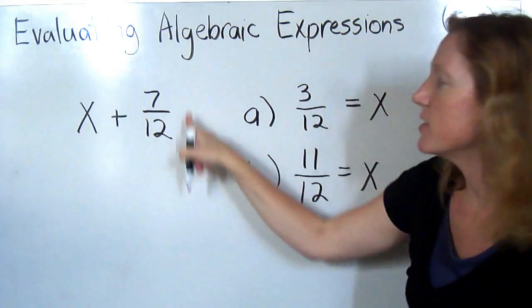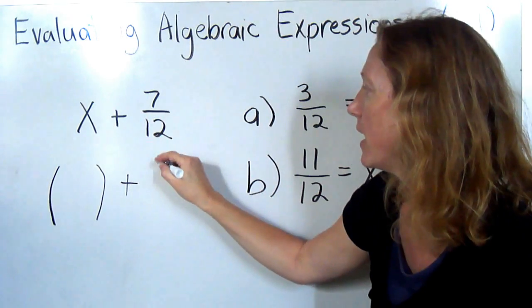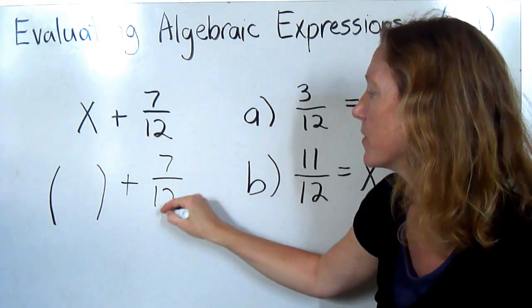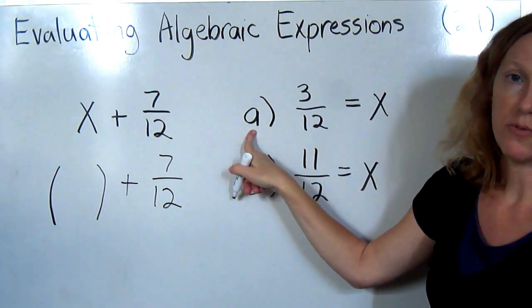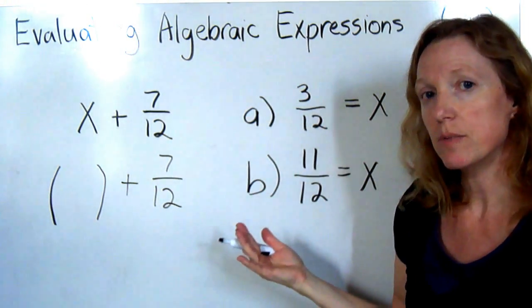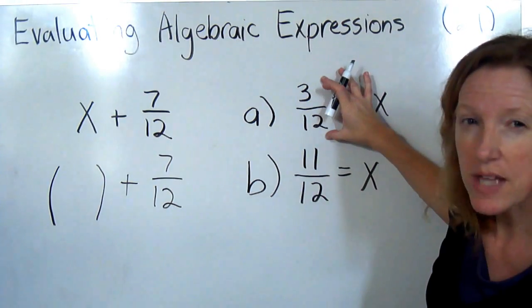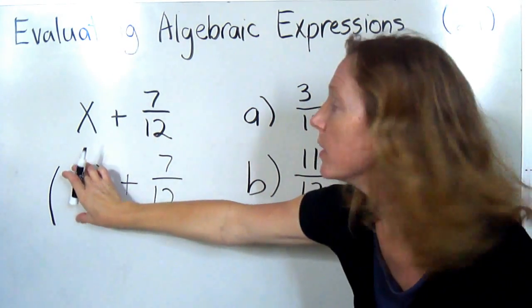So we have two different values for the x. x plus 7 twelfths. So I'm going to take the x and replace it with one of the numbers. We'll use the example from A first, 3 twelfths. This is, if you're working on a computer, this is like cutting and pasting. I'm going to cut this 3 twelfths out here and paste it into the problem.